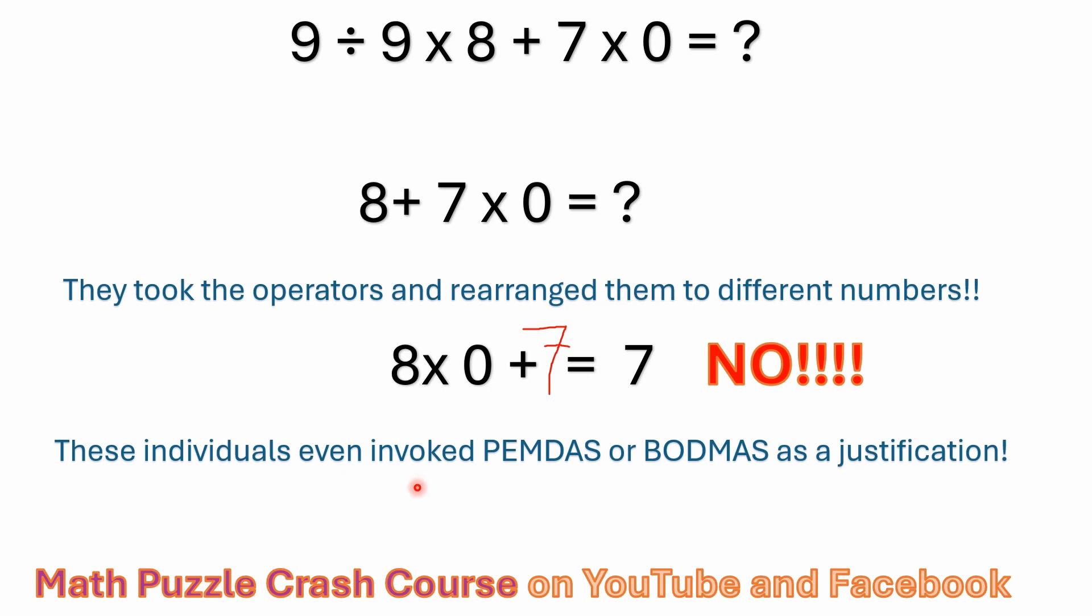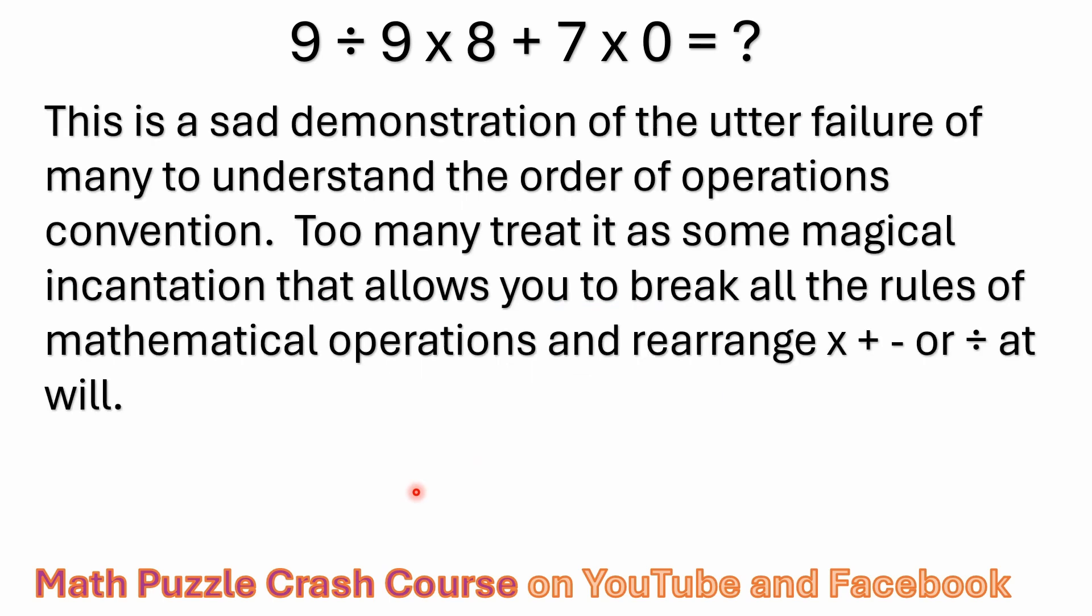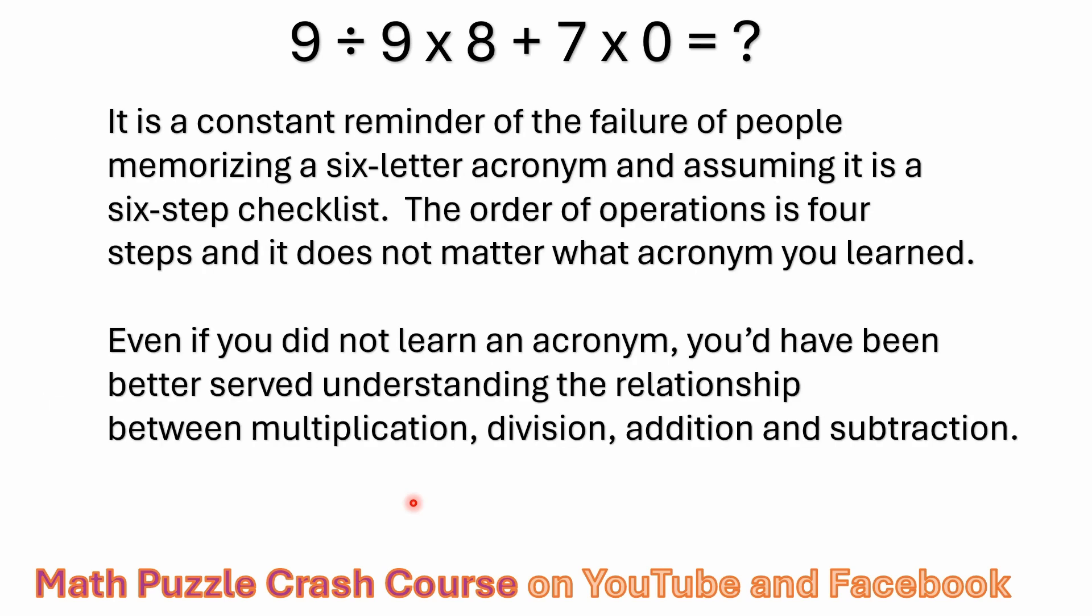So what I'm trying to get across to you is if you've really thought it was seven and you think you understood the order of operations, realize that you don't, you're having an issue here, understanding how mathematical operators actually work. It's kind of a demonstration of the failure of many to understand the order of operations convention. You got to remember this thing is not some kind of magical incantation that allows you to break all the rules of mathematical operations and rearrange those signs at will. I mean, that's not how it works. It also reminds me, there's this failure, a lot of people to memorize a six letter acronym and assume it's a six step checklist too. I mean, it's only four steps. That's all there are in the order of operations.